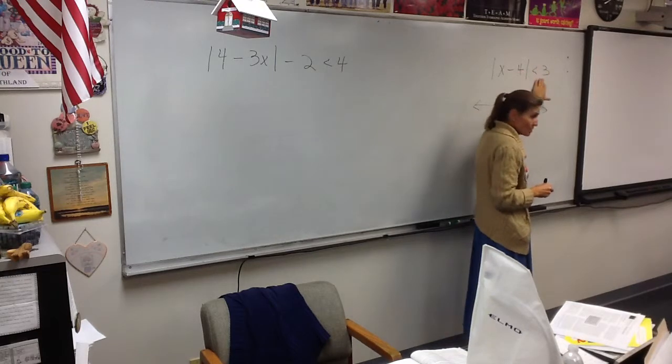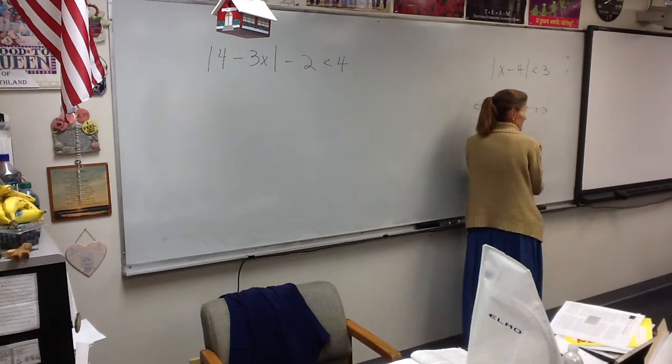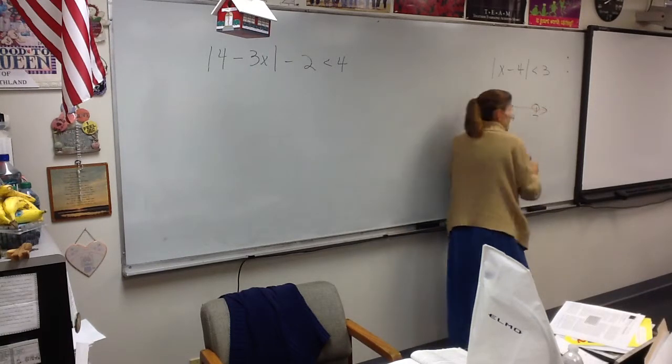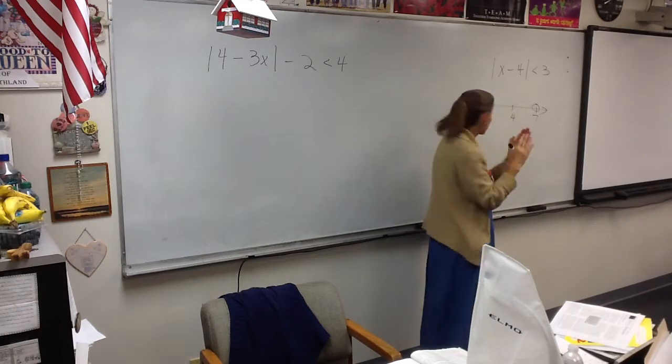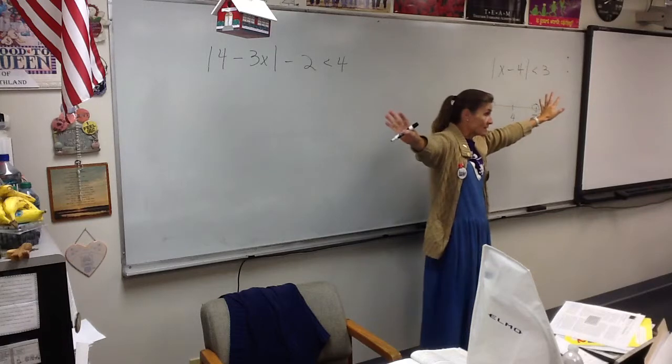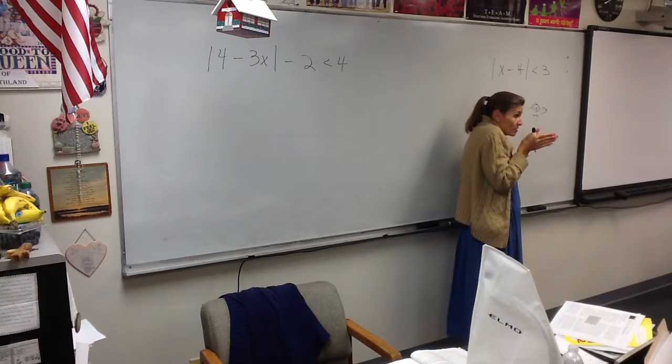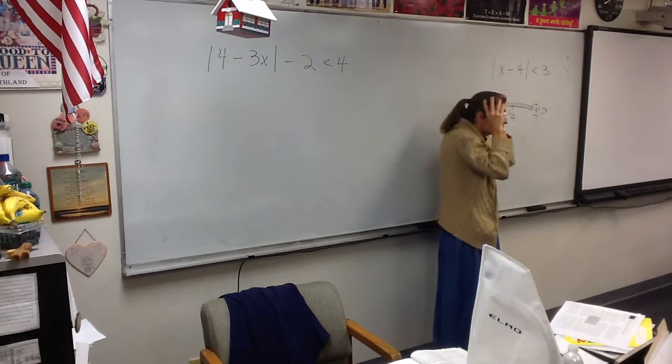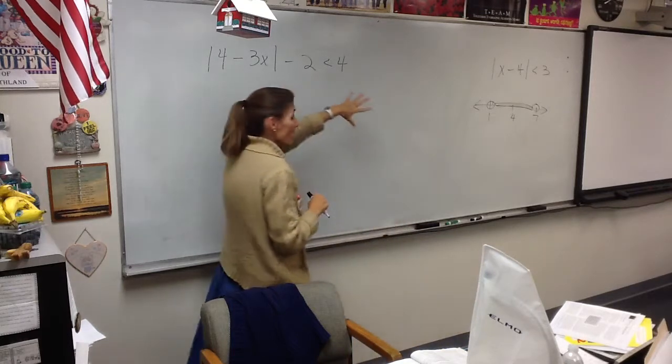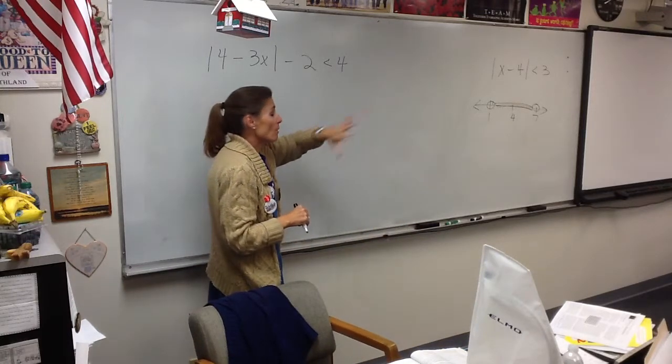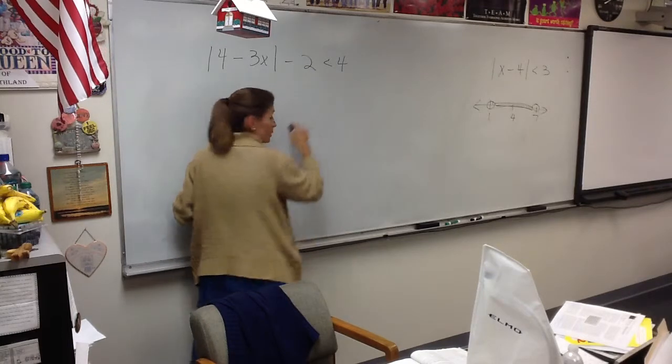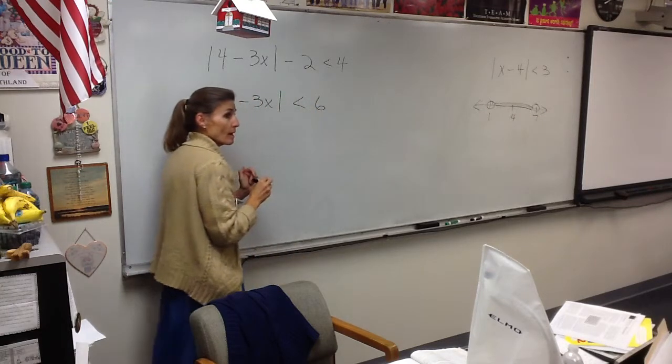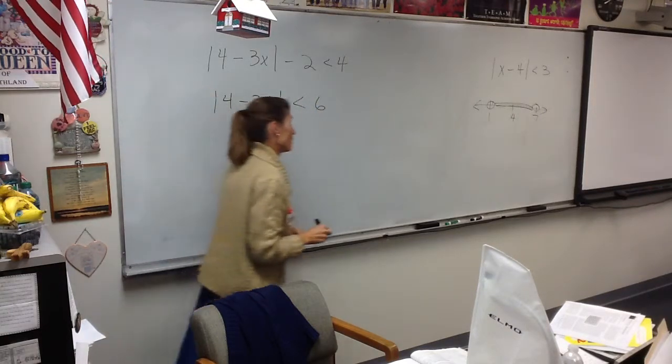So, this literally says the distance between some number and 4 is less than 3. The distance is 3. So the farthest south this could be is 7, and the farthest back it could be is 1. Those are open dots. Now, I'm either going to consider everything between 1 and 7 or everything beyond 1 and 7. This says the distance is less than 3, so these are the numbers I'm talking about. That is so easy. You just think for a second.